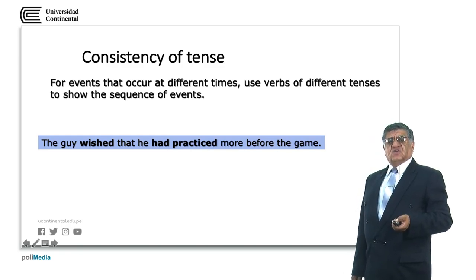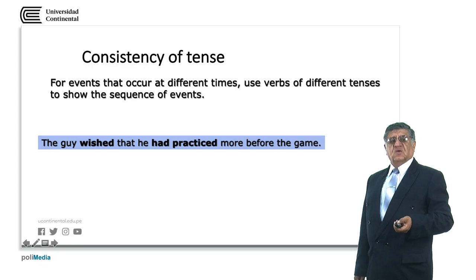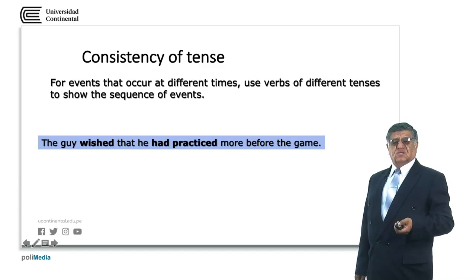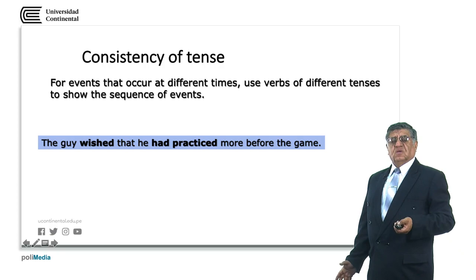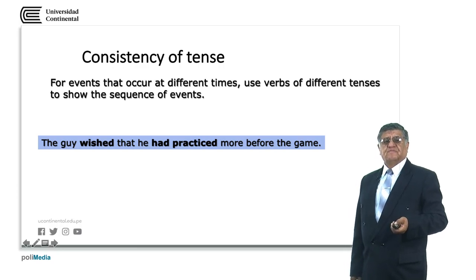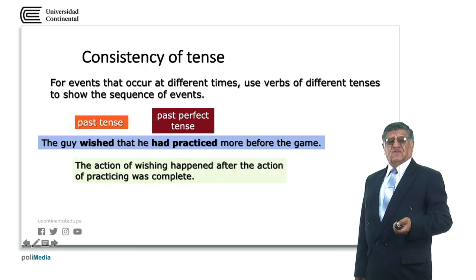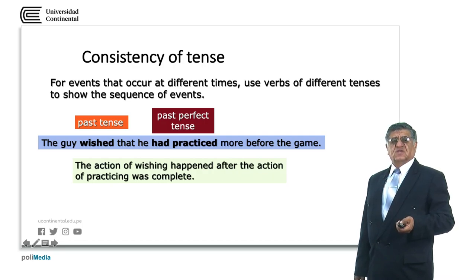For two events occurring at different times, we need to use the corresponding verb forms. For example: the guy wished that he had practiced more before the game. Wished is the past tense at some point in the past, but had practiced is something that occurred before the wish — the past perfect tense describes a situation that happened before the past tense expressed in the first clause.